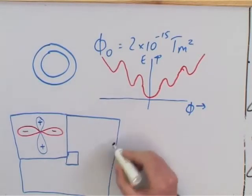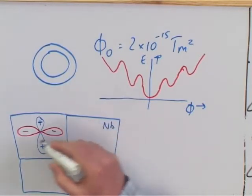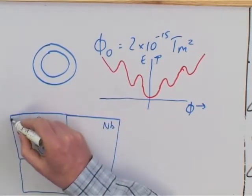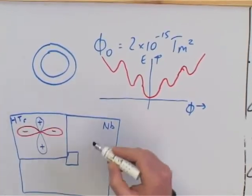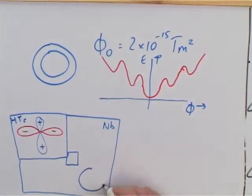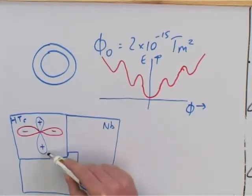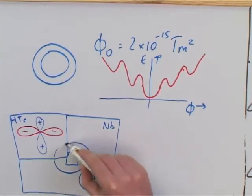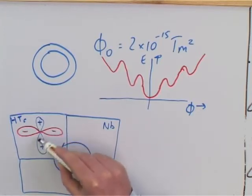This is then a low-temperature superconductor, for example Niobium, and this is a high-Tc superconductor, like YBCO copper oxide. Now the symmetry of the wave function in the Niobium — so-called S-wave symmetry — means that there is no phase change for different directions, so let's call this plus. And now you see a funny effect: if you walk around the ring, you have a built-in pi phase shift.